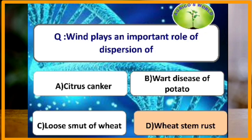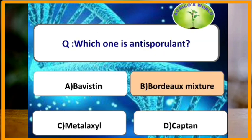Wind plays an important role in the dispersion of uredospores of wheat stem rust, which is caused by Puccinia graminis tritici. Which one is an anti-sporulant? Bordeaux mixture is an anti-sporulant — it kills spores.